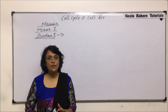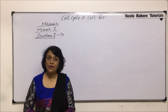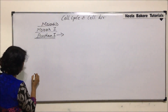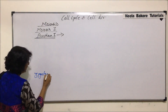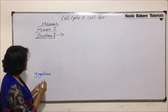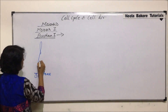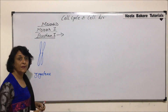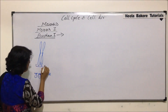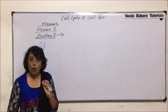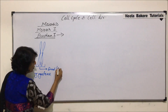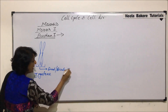We'll continue with the changes that have taken place during zygotene. Instead of drawing the whole stage, we will just see those changes. In the zygotene stage, the pairing of chromosomes takes place. We show these chromosomes like this — this is the homologous pair, and this pairing is known as synapsis. The pair which is formed is known as a dyad or a bivalent.